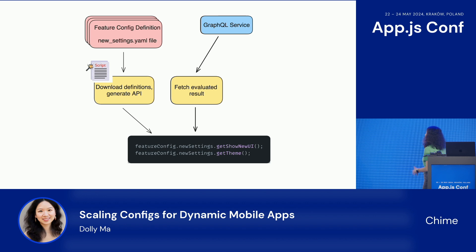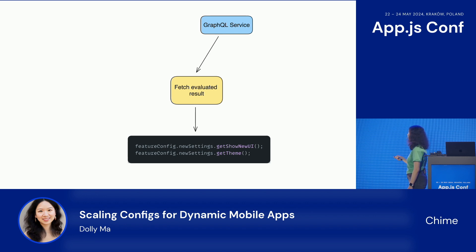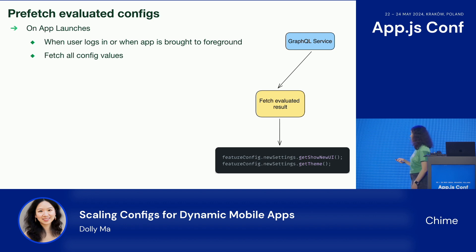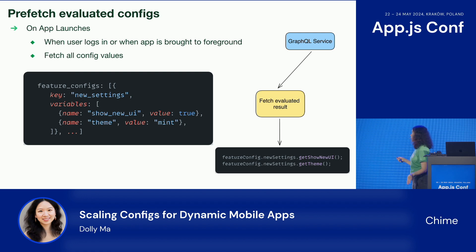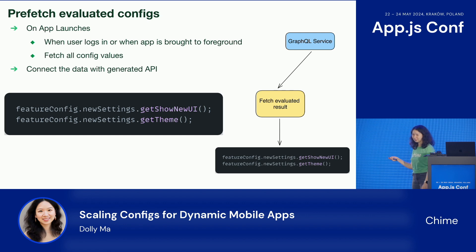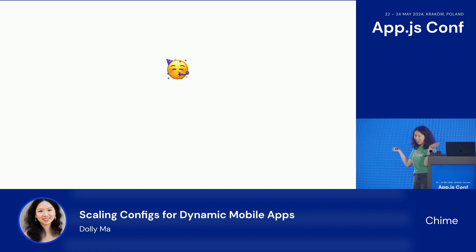Now let's look at the second step: prefetching. When the app launches — meaning when the user logs in or the app is brought to foreground — we fetch all the configs. The result is a list of all configs with a key of each config and the variables list. For each variable, we have the name and the evaluated result. We then connect the data with the generated API, and the API is ready to use.